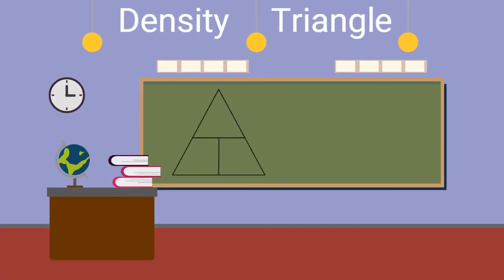Let's learn how to use the density triangle as a tool to help us solve density problems. It might be easy to remember that the formula to find density is density equals mass divided by volume. This is easy enough if the problem gives us the mass and the volume of the object.